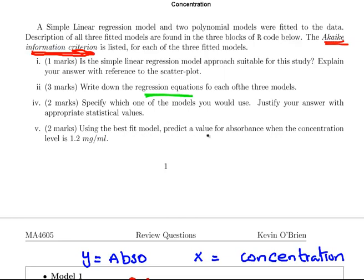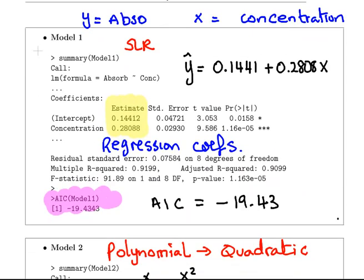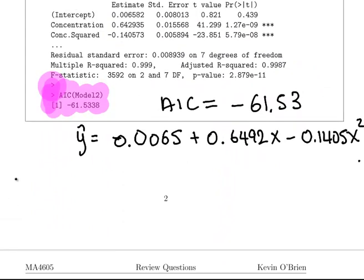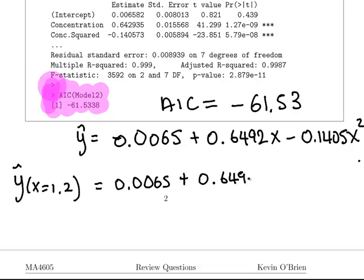Using the best fit model, predict the value for absorbance when the concentration is 1.2. What we'll do here is Y hat when x equals 1.2 is equal to 0.0065 plus 0.6492 times 1.2 minus 0.1405, 1.2 squared. That's a little bit of calculator work. I'll let you finish that yourself. So that is the predicted value of y when x equals 1.2. That's question of polynomial regression and AIC.